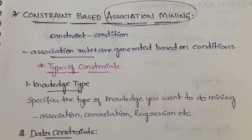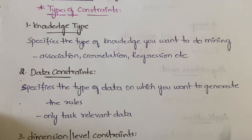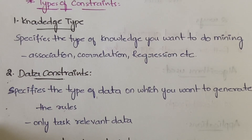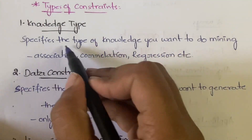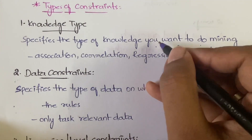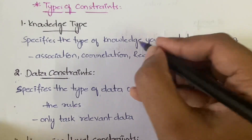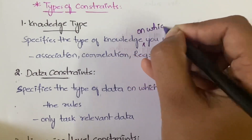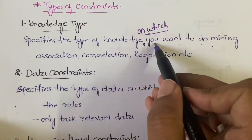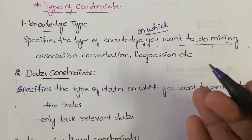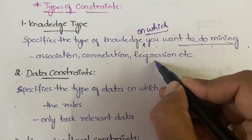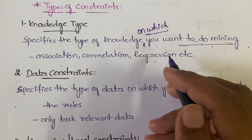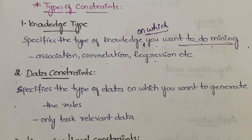We have five types of constraints. I'll explain all of them in this video. The first one is knowledge type. Knowledge type constraint specifies the type of knowledge on which you want to do the mining. We have different types of knowledge — association, correlation, regression, clustering, classification, and so many more. Among those types, which type you want to select — that is what the knowledge type constraint is about.